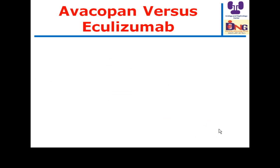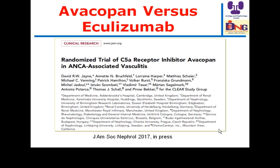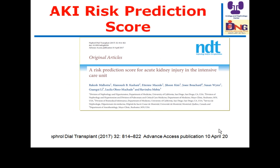There is an important difference between Avacopan and Eculizumab. Both target the complement pathway, but Eculizumab is a monoclonal antibody that inhibits the activation of complement 5 into 5A and 5B, whereas Avacopan is an oral drug that targets the C5A receptor — it is a C5A receptor inhibitor. This study is a randomized trial of Avacopan in ANCA-associated vasculitis.